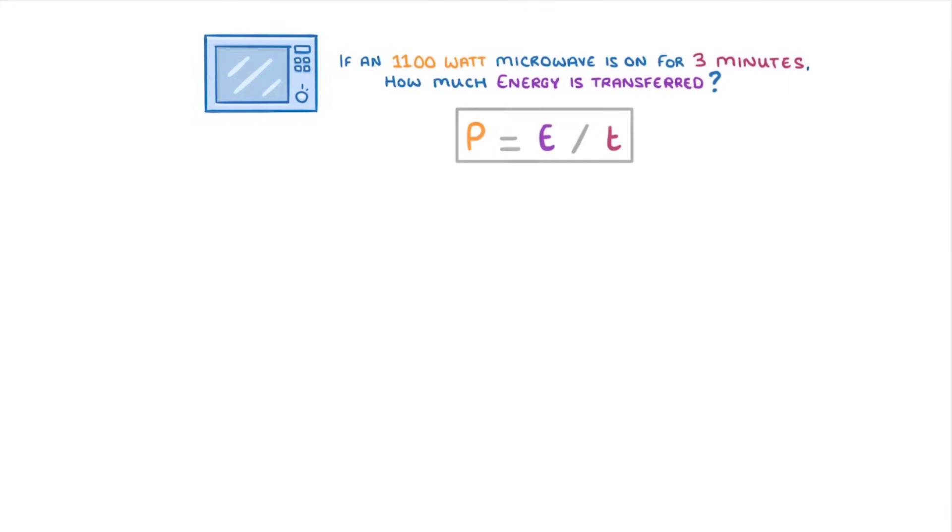Let's now try a slightly harder example. If an 1100 watt microwave is on for 3 minutes, how much energy is transferred? First, we need to take our energy transferred equation and rearrange it to get energy transferred by itself. If we put the equation into a formula triangle like this, we can see that energy transferred would be equal to power times time. We also need to change our 3 minutes to 180 seconds by multiplying it by 60.